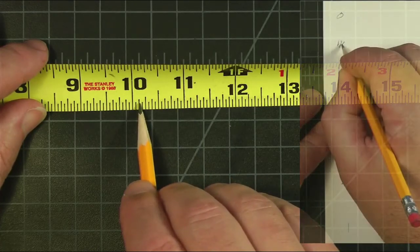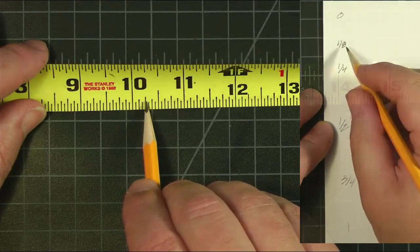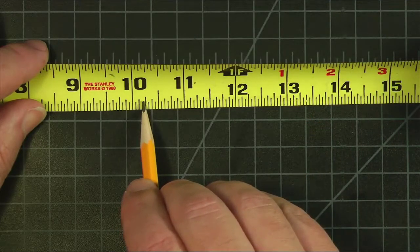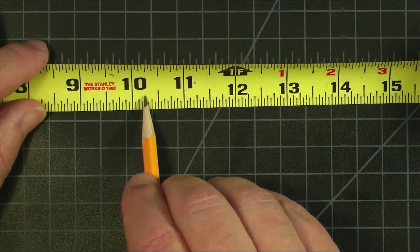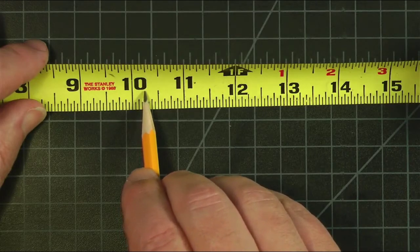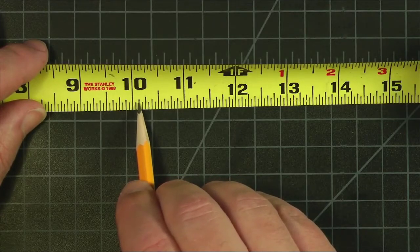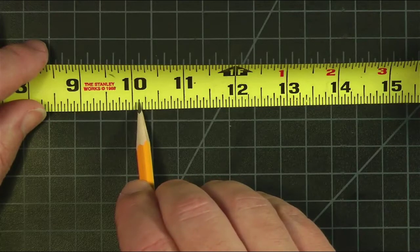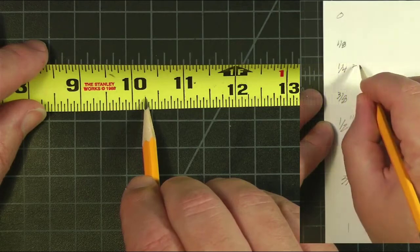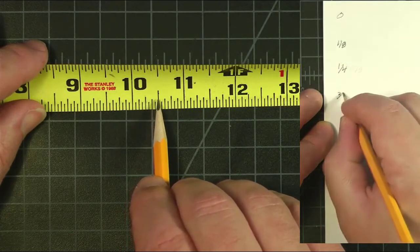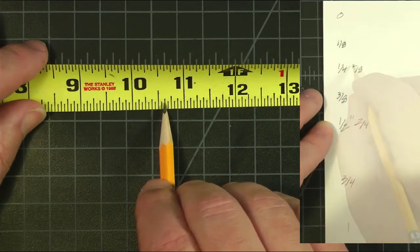Here we have 1 eighth, which is half of a quarter. If we just double the bottom number, 1 quarter, that's the same as dividing it in half. So this is 1 eighth, 2 eighths, 3 eighths, 4 eighths, 5 eighths, 6 eighths, 7.